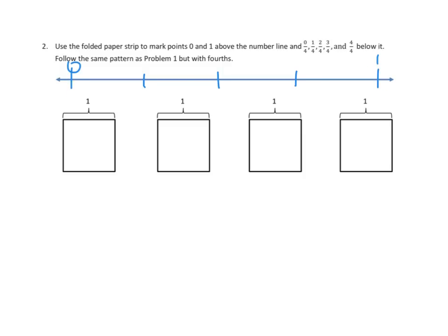And this would be 0 fourths. I'm going to go ahead and label that 0 fourths. And then, this over here must be 1 fourth, and then 2 fourths, right there in the middle. And then 3 fourths, and then all the way up here to 4 fourths. Excellent. That seems to make sense.